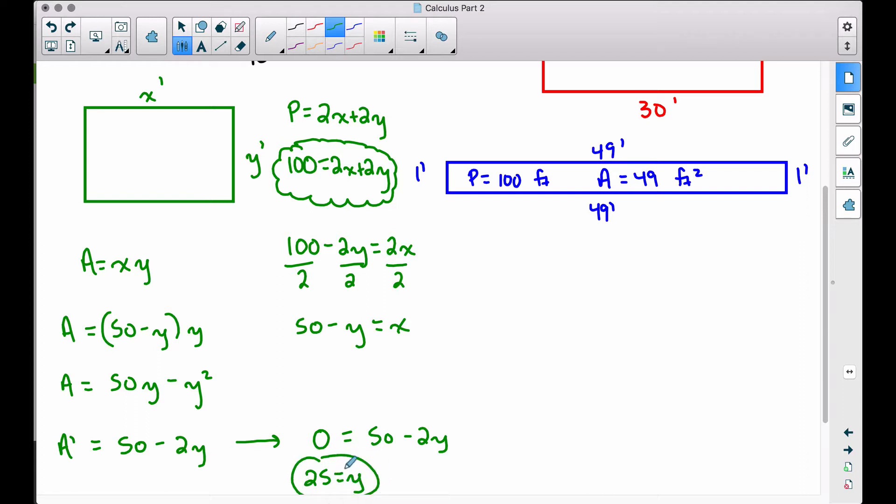Now that we know what y is, we can take y equal to 25, 50 minus 25 gives us an x value of 25 as well. So what I did there is I went back to one of my original equations. You could have went all the way back up here to this, but since you already got x by itself here and you figured out y was 25, 50 minus 25 gives you 25.